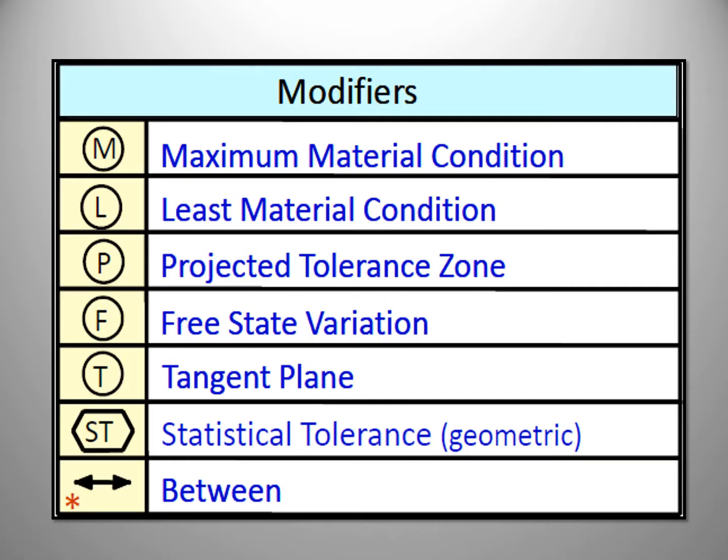There are seven modifiers in total. The first one is maximum material condition, the second is least material condition, then projected tolerance zone, free state variation, tangent plane, statistical tolerance, and between.